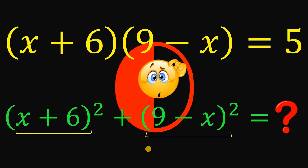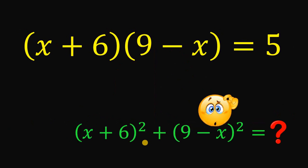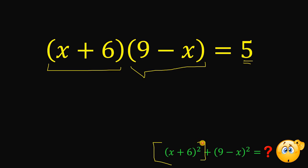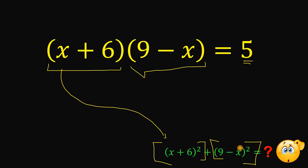And now, let's answer this question together. So given this equation, x plus 6 multiplied by 9 minus x equals 5, our goal is to find the numerical value of x plus 6 raised to the power of 2, plus 9 minus x raised to the power of 2. One method is, of course, to solve for the value of x and then substitute into this expression and get the equivalent value. But in this video, we will do a different thing. Now let's begin.